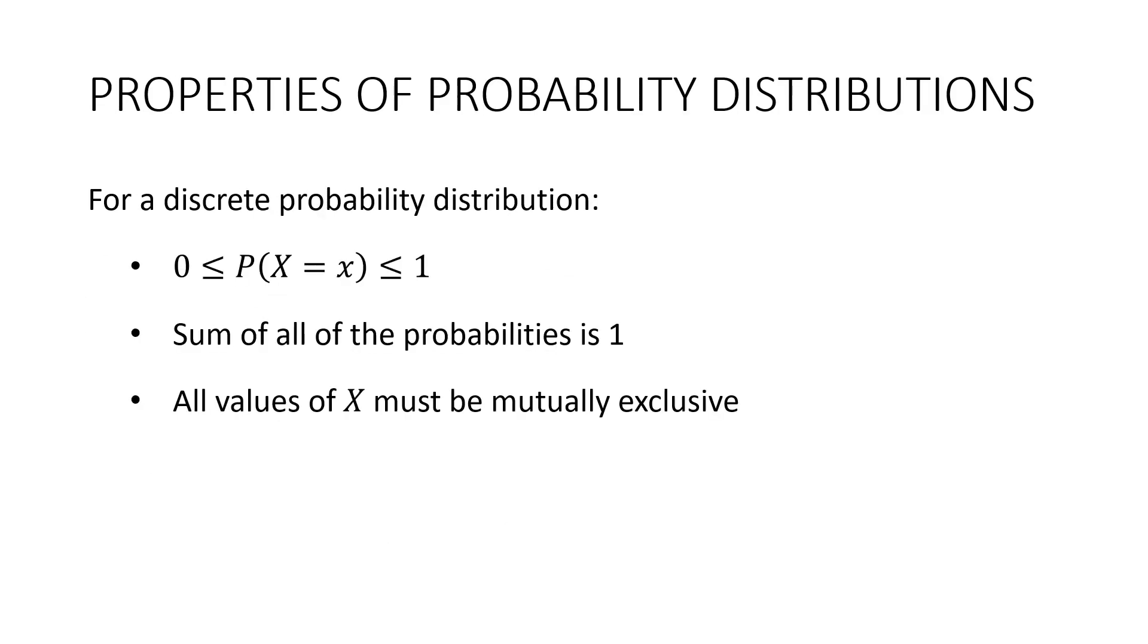So here are the properties of probability distributions, and one of them I've just given you a hint for. For a discrete probability distribution, all of the probabilities must be between 0 and 1. We're used to that. Probabilities must always be between 0 and 1. We can't have a negative probability, and we can't have anything greater than 1 because 1 means certain. Secondly, the sum of all the probabilities must equal 1. That's the one we just talked about. And thirdly, all the values of X must be mutually exclusive. Do you remember what that means? It means there's no overlap. We can't have a value of X being in two boxes.